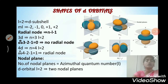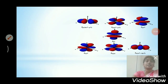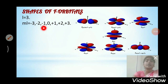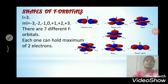Next we move on to the f orbital. The L value for the f orbital is 3, and ml takes values from −3 to +3, giving 7 different f orbitals. Each orbital can hold a maximum of 2 electrons, and f orbitals have 3 nodal planes.